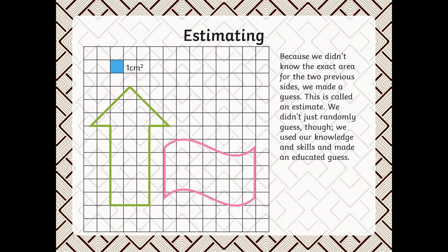Estimating. Because we didn't know the exact area for the two previous slides, we made a guess. This is called an estimate. We didn't just randomly guess. We used our knowledge and skills and made an educated guess.